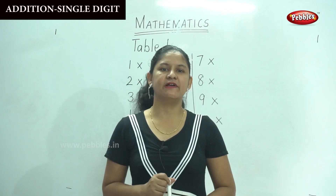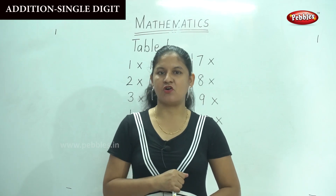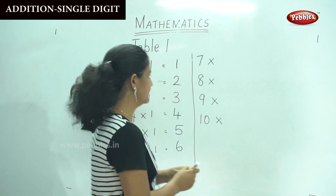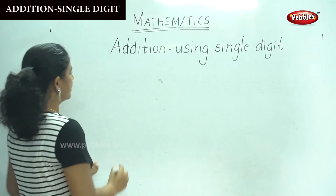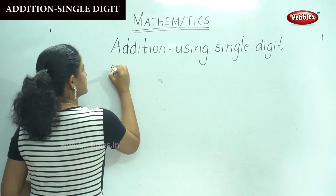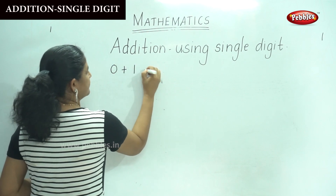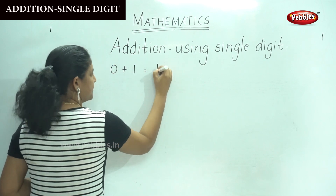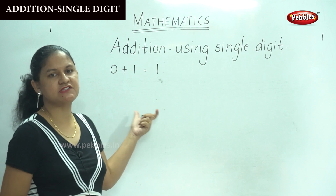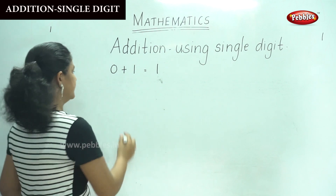Today we are going to see addition of single digits. Any number with the number 0 — for example, 0 plus 1 will give you number 1. So any number with 0 will give you the same number.